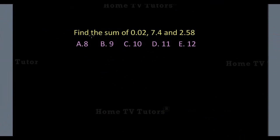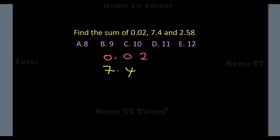Find the sum of 0.02, 7.4 and 2.58. We write out these decimal numbers in columns. That is 0.02 plus 7.4 plus 2.58.